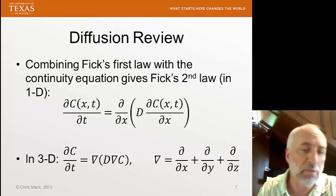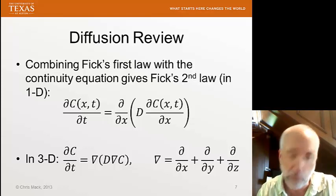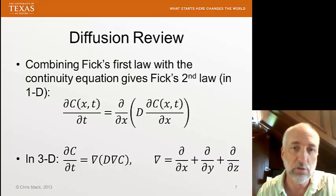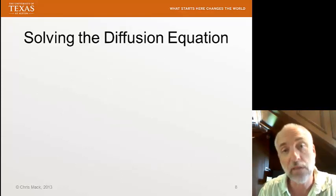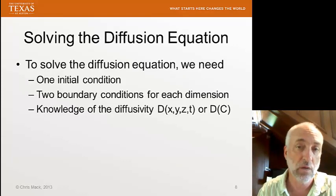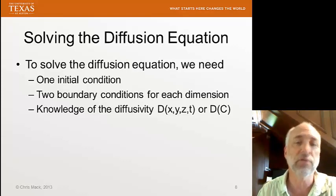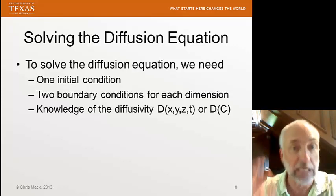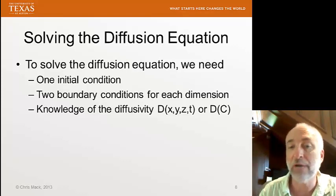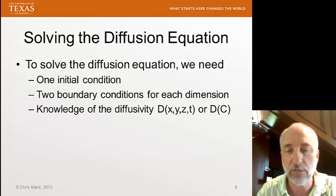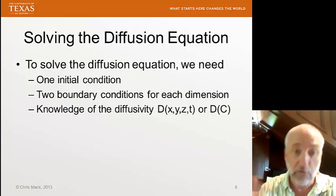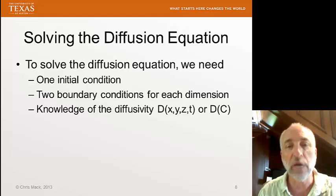We're going to work our problems in the next lecture only in one dimension, but in real three-dimensional devices a three-dimensional solution is required. Our goal is to solve the diffusion equation. What does it take to solve the diffusion equation? We need three things: first, an initial condition — what is the concentration of the dopant everywhere at the beginning, at T equals zero? Then we need two boundary conditions for each dimension. It's a second-order equation — second-order in X — so to integrate twice we need two boundary conditions.